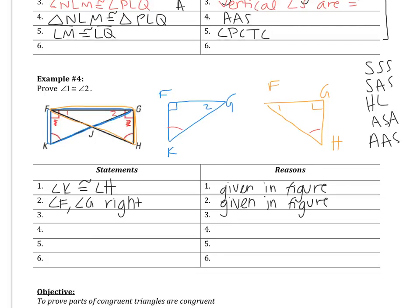Anytime you have right angles, your mind goes to HL. But looking at statement 1, we have a pair of congruent angles, and angles have no place in HL. So HL is not what we're using. Because we have a pair of angles, we're not using SSS either. We're either going to use SAS, ASA, or AAS. The right angles here mean the angles are congruent, so we can say angle F is congruent to angle G because right angles are congruent.